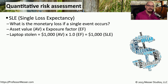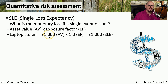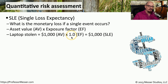Now we can start calculating a quantitative risk assessment. We'll start with the SLE, or single loss expectancy, which is the monetary loss we receive if one single event occurs. You can calculate this by taking the asset value (AV) and multiplying it by the exposure factor (EF). For example, if we have a laptop stolen, the rough asset value is around $1,000. Since the entire asset is now missing, the exposure factor is 1.0. Multiplying $1,000 by 1.0 gives us a single loss expectancy of $1,000.